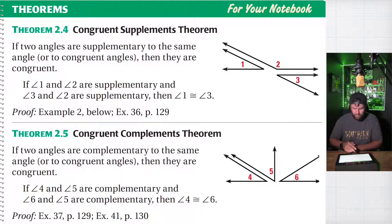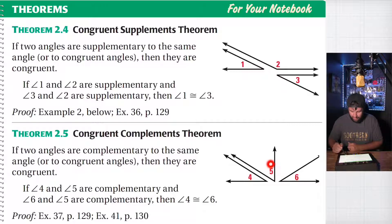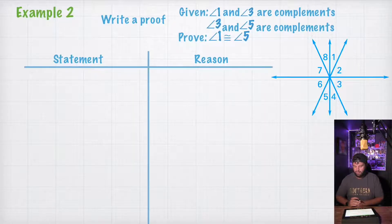So the congruent complements theorem — same idea as the congruent supplements theorem. If two angles are complementary to the same angle, then they are congruent. So if angle 4 is complementary to angle 5 and angle 6 is complementary to angle 5, then angle 4 would be congruent to angle 6 by the congruent complements theorem. Okay, let's just go ahead and keep on rolling.